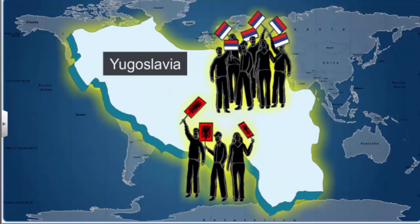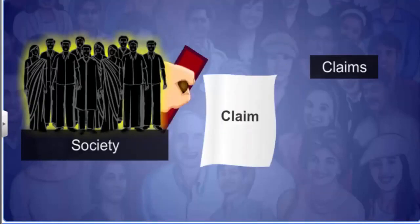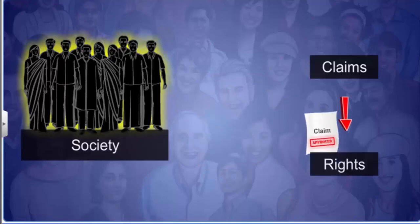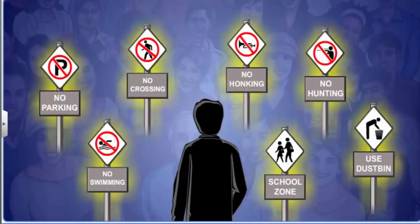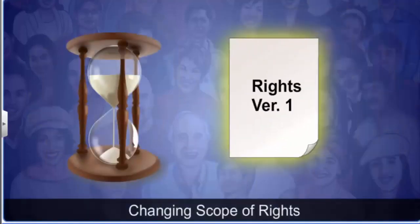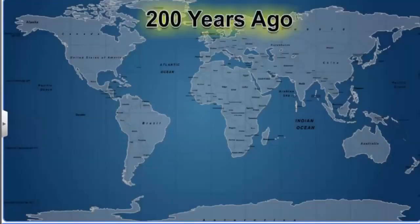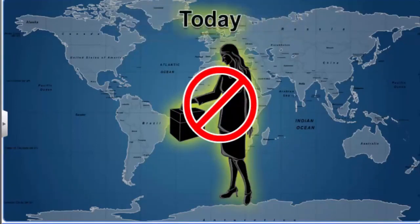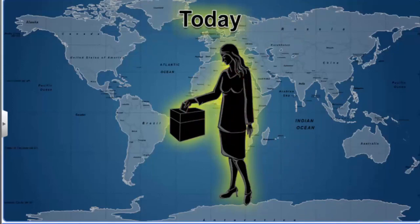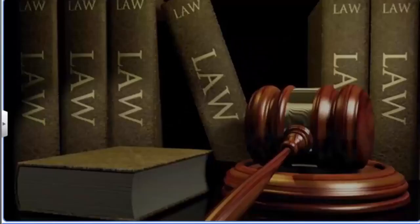A claim cannot become a right unless it is recognized by society. Within a society, rules are made to regulate the conduct of people and emphasize the difference between right and wrong. Claims that are recognized by society as rightful form the basis of rights. With changing times, the scope and meaning of rights also changes. A classic example is that about 200 years ago, the fact that women had no right to vote was accepted worldwide. But today, stopping a woman from voting even in Saudi Arabia appears strange. To enforce a socially recognized claim in action, it needs to be written in the form of a law, or else it remains confined to the boundaries of a mere moral right.